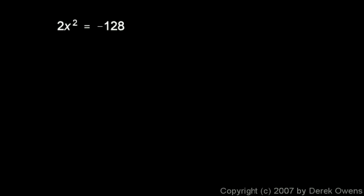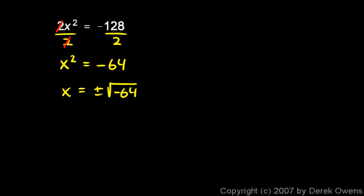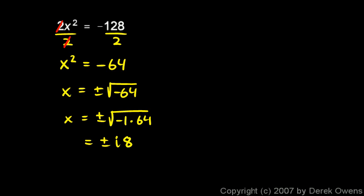In this one we're told 2x² = -128 and we want to solve for x. Dividing both sides by 2 leaves us with x² = -64. Taking the square root of both sides gives x = plus or minus the square root of -64. I think of this as -1 times 64: the square root of -1 gives i and the square root of 64 gives 8. So I have plus or minus i times 8, written as plus or minus 8i.